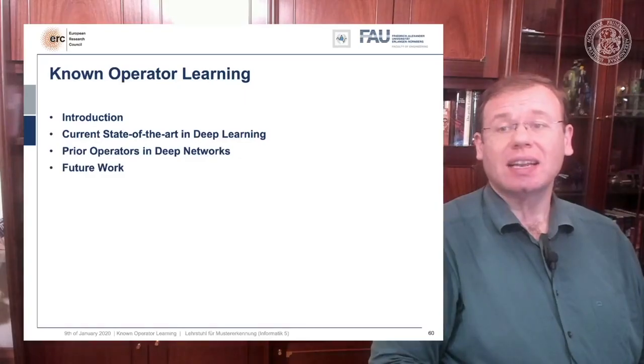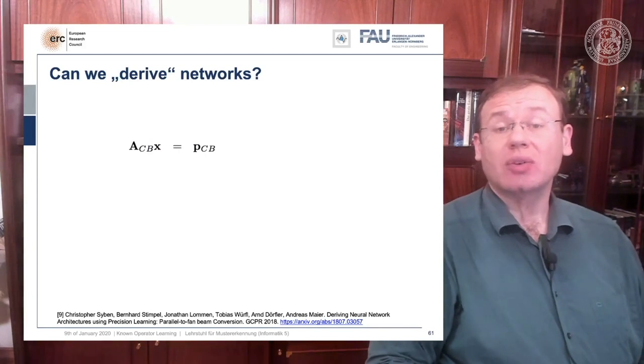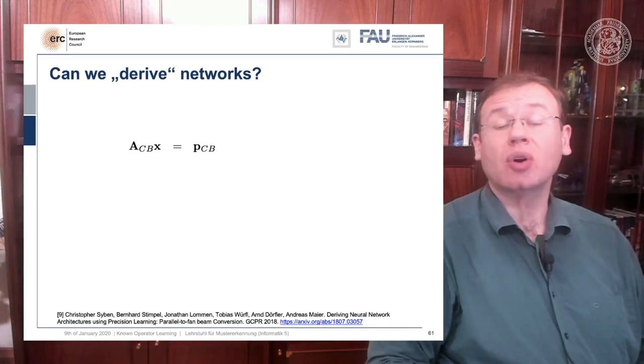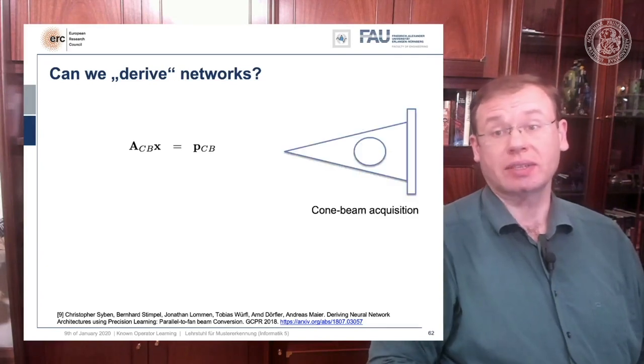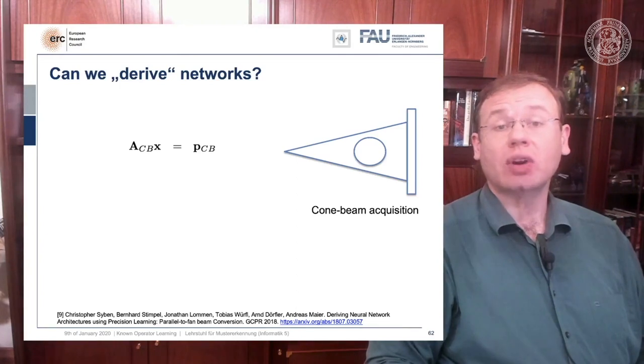And let's look into one more idea. Can we derive networks? Here let's say you have a scenario where you collect data in a format that you don't like, but you know the formal equation between the data and the projection. The example that I'm showing here is a cone beam acquisition. Let's say this is simply a typical x-ray geometry. So you take an x-ray and this is typically conducted in cone beam geometry. Now for the cone beam geometry we can describe it entirely using this linear operator as we've already seen in the previous video. So we can express the relation between the object x, our geometry A_cb, and our projection p_cb.